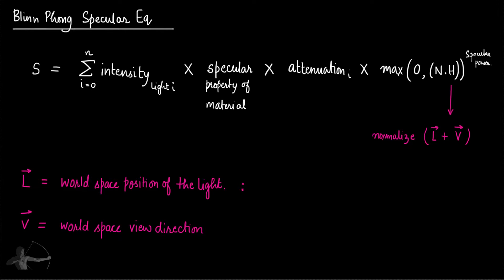The world space position of the light is given to us by a built-in shader variable that Unity provides us, which is _WorldSpaceLightPos0. As for the world space view direction, we will have to calculate it in the shader.